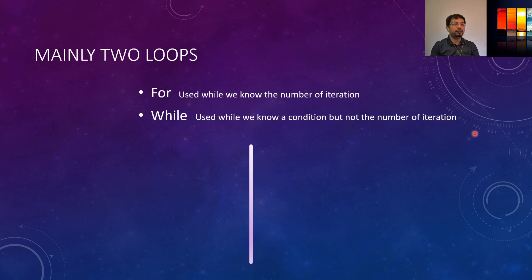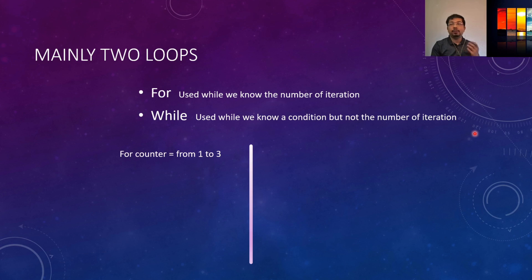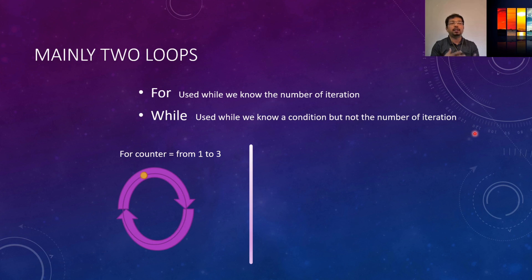For example, the counter variable that we defined is increasing from one to three and we know the iteration number, so a for loop is a better choice here. We can see the for loop runs one, two, and three times. So we can use for in this case.